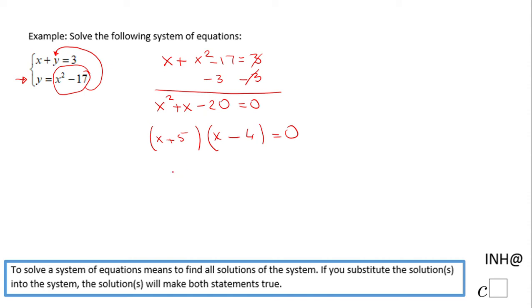We can use the zero product property and we have the first factor equals 0 or the second factor equals 0. Subtract 5 on both sides, we end up with x equals negative 5. And here we add 4, we get x equals 4. We have two x's, but this is a system of equations and we need to find also y's.